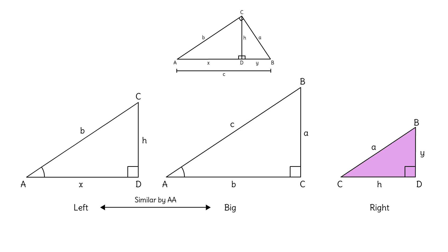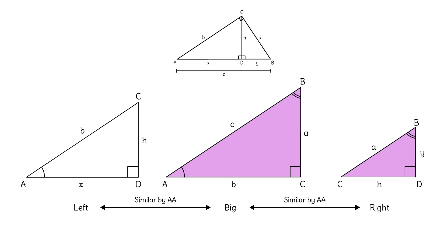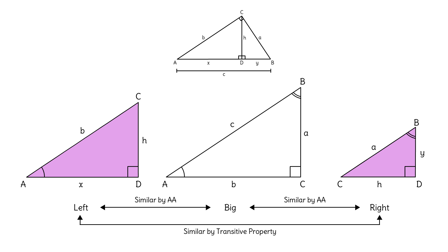How about the triangle on the right and the big triangle? They each have a right angle, and they share angle B in the original diagram. That means these two triangles are also similar by AA. If the triangle on the left is similar to the big triangle, and the triangle on the right is also similar to the big triangle, then the triangle on the left is similar to the one on the right — that's the transitive property of similarity.